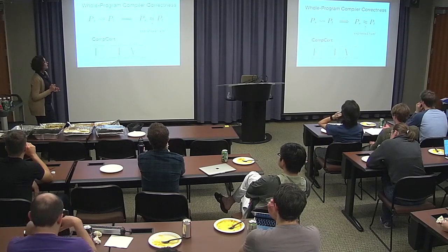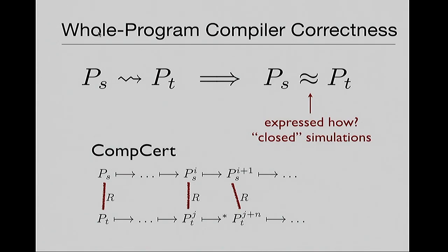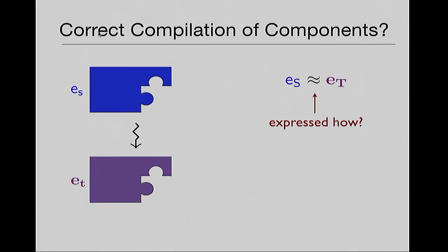There are issues of forward simulation and backward simulation I won't go into — these are closed simulations. The claim is: if I run the target program and see certain observable behavior, when I run the source program, I'm going to see the same observable behavior. But this is a very closed world assumption — I have my whole program that I need to run. If we try to ask that same question for components, I can't run them. They're pieces of a program. They aren't a whole program yet.